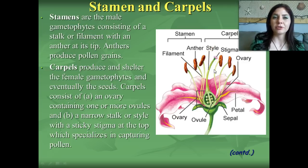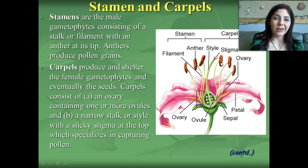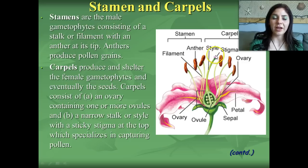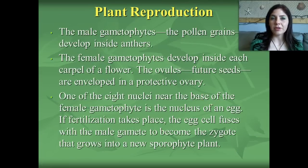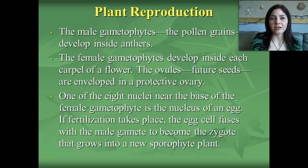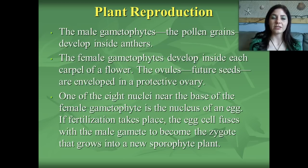Pollen is transferred to the sticky stigma either by wind or by a bee, bird, bat, or even a human. The sperm then travels down the style into the ovaries where it fertilizes one of the ovules or eggs. The male gametophyte, or pollen grains, develop inside the anthers. The female gametophytes develop inside each carpel of the flower. The ovules are the future seeds, enveloped in a protective ovary, and one of the eight nuclei near the base of the female gametophyte is the nucleus of an egg.